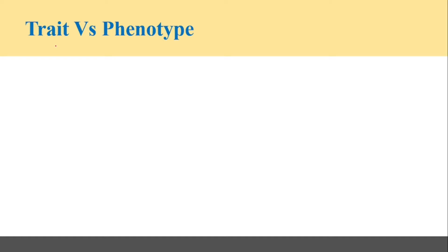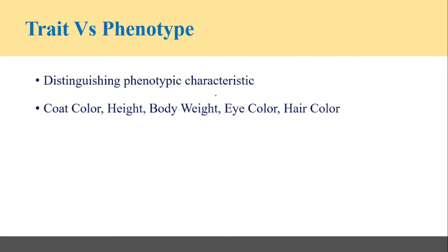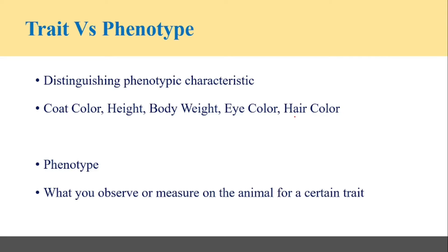Before moving towards today's topic, I want to let you know about the differences between trait and phenotype. A trait is a distinguishing phenotypic characteristic — any characteristic on the basis of which you can differentiate between living organisms. For example, coat color is a trait, as are height, body weight, eye color, hair color, milk production, and egg production. Phenotype is what you observe or measure on the animal for a certain trait. For example, coat color is the trait, and what you observe — like black or white — is the phenotype.